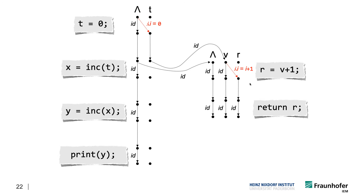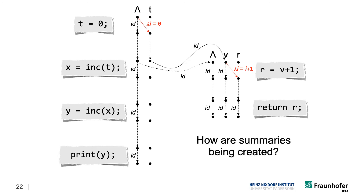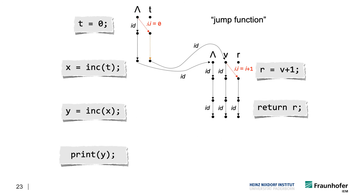We have reached the end of a procedure, and in IFDS we would summarize this procedure using summary edges. In IDE, summaries are created very similarly to IFDS. In IFDS we have path edges — a path edge summarizes a path that starts at the beginning of the procedure and ends at the current statement. In IDE, we have a very similar construct called a jump function. It's no longer a simple path edge because it now has a function annotation — that's why it's called a jump function. It jumps across different statements and summarizes a path using a function.